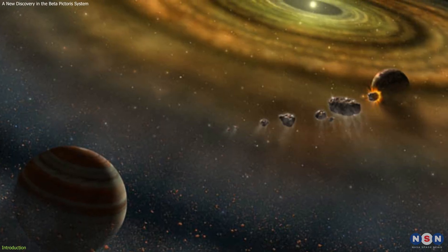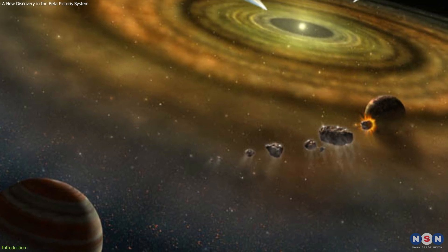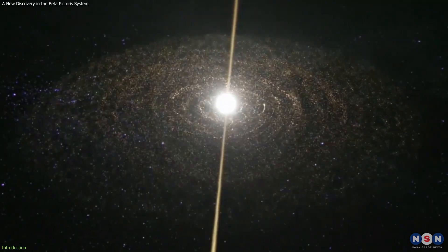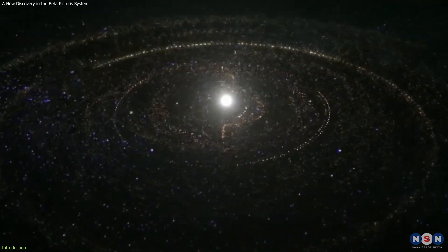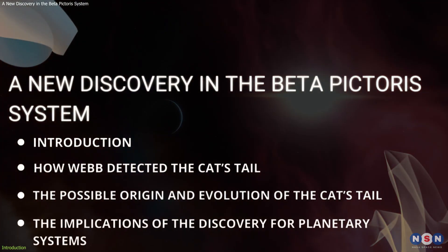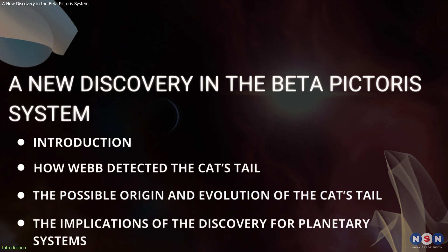This is a remarkable discovery, as it reveals the complexity and dynamism of the Beta Pictoris system, and it may help us understand how planets form and evolve in different environments. In this video, we will learn more about this discovery, how it was made, and what it means for our understanding of planetary systems.